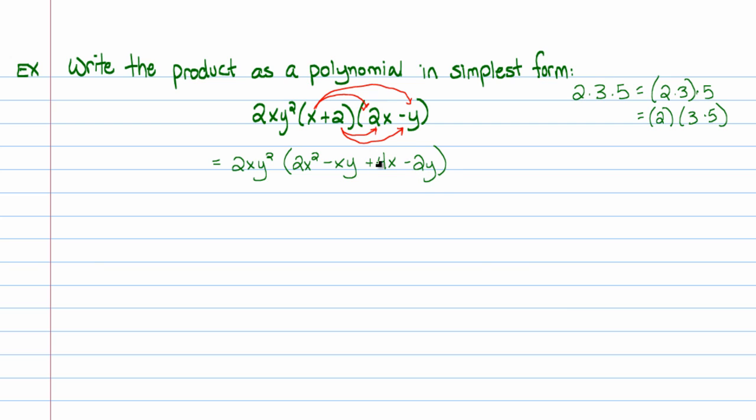Now in this case I would try to combine like terms but as you look through this none of these terms are the same. So there's nothing to combine here. This is as good as it gets. So now what I'll do is I'll take this coefficient here, this 2xy² monomial, and I will go ahead and distribute it again to each of the terms in the parentheses.